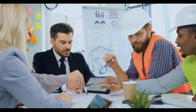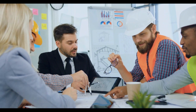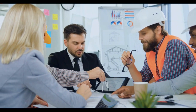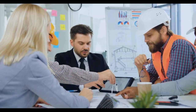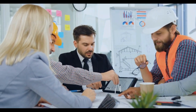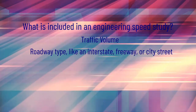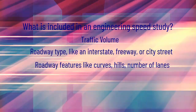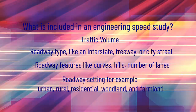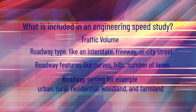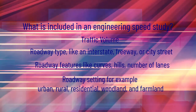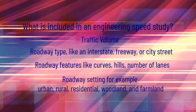What is included in an engineering speed study? Traffic volume. Roadway type, like an interstate, freeway, or city street. Roadway features like curves, hills, and number of lanes.